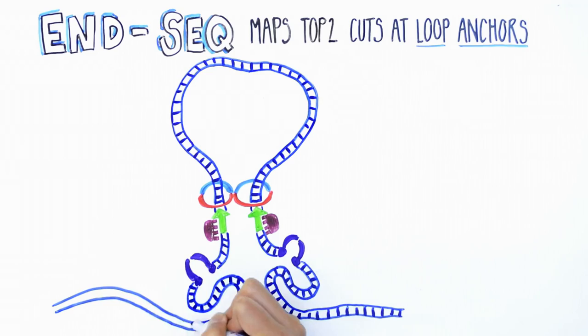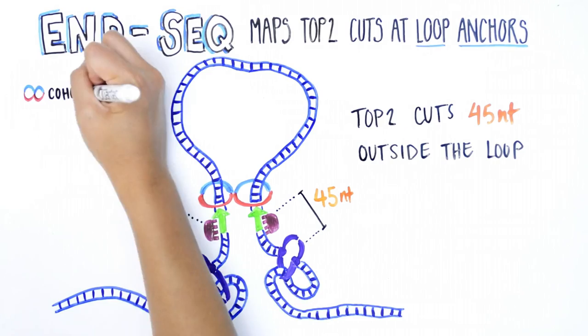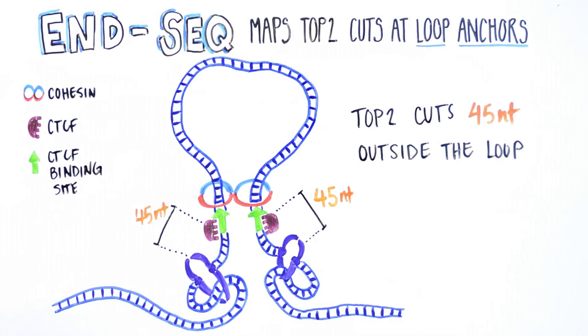We therefore propose that during loop extrusion, TOPO2 is needed to periodically clear up the intertwined DNA that builds up just outside of the loops. In this way, transient DNA breaks may help keep massive genomes organized without entanglements.